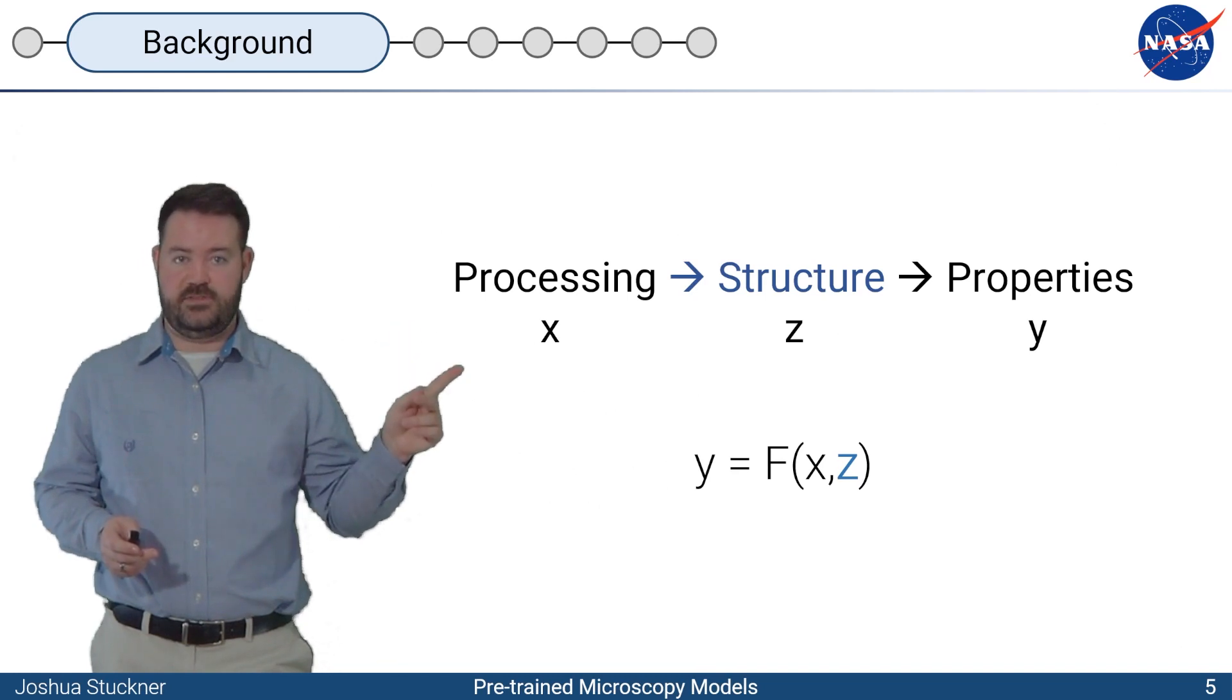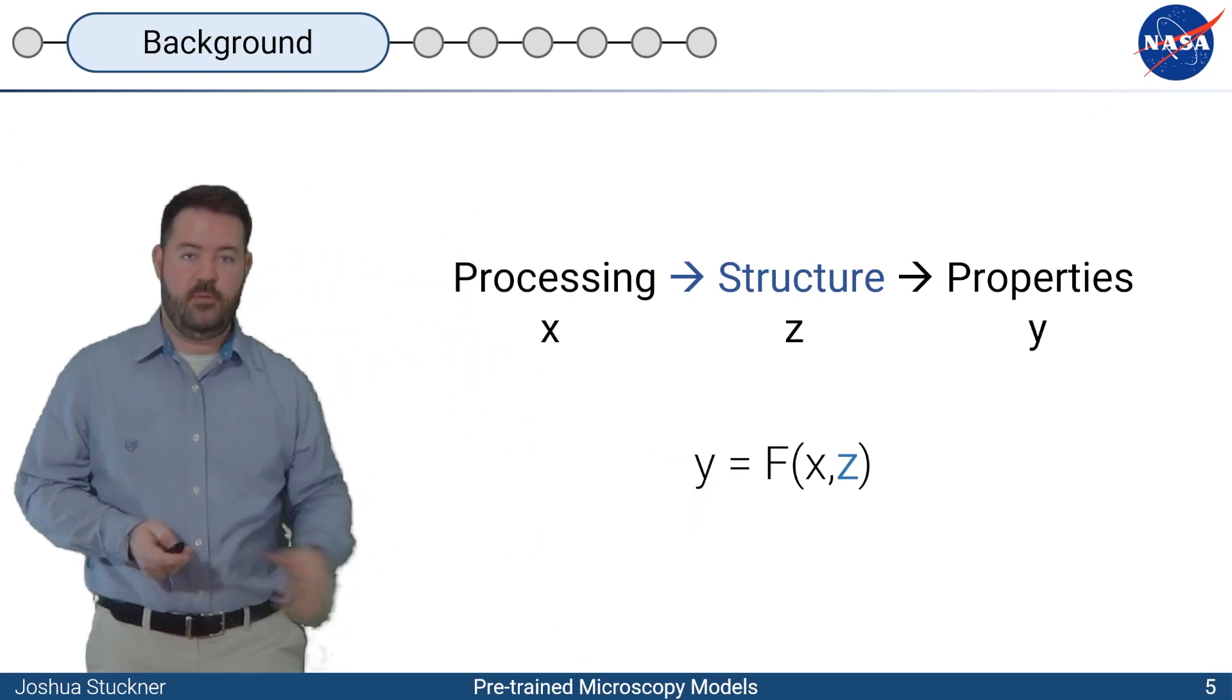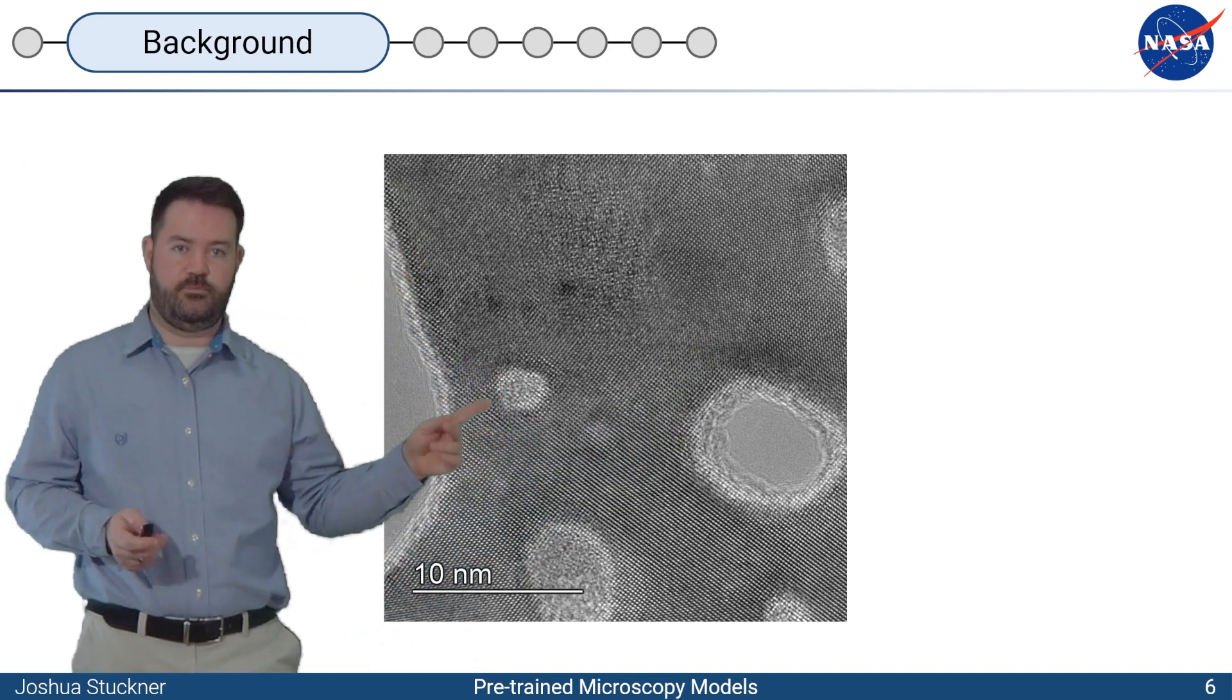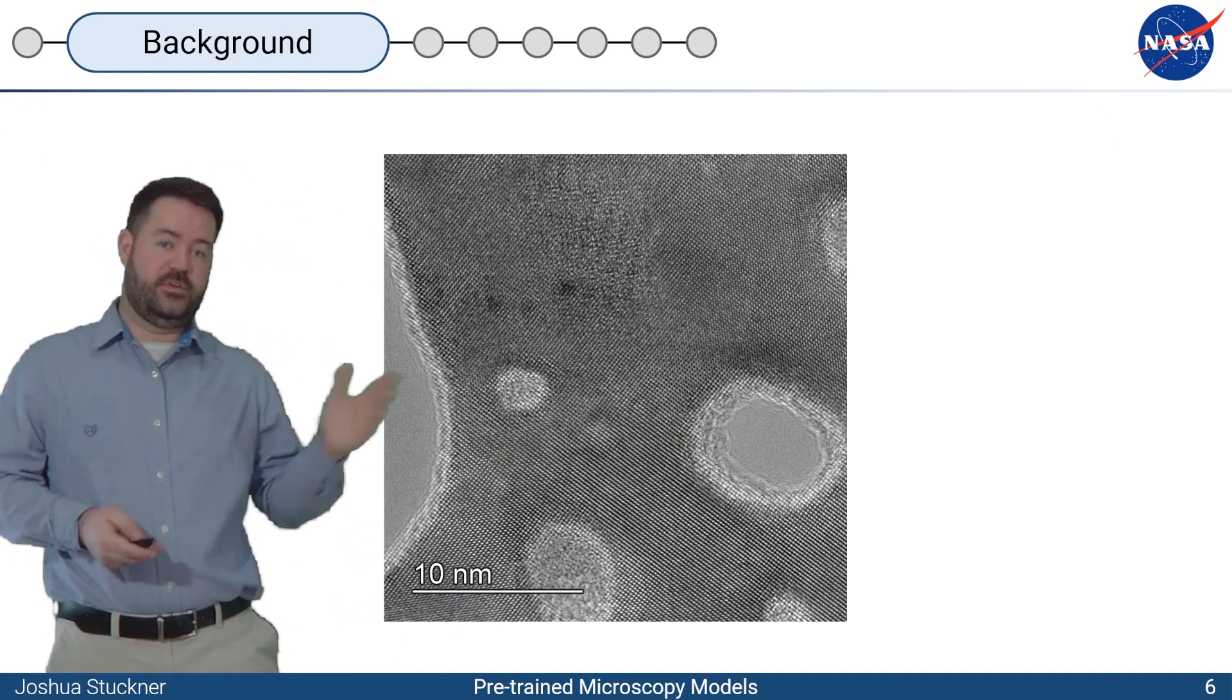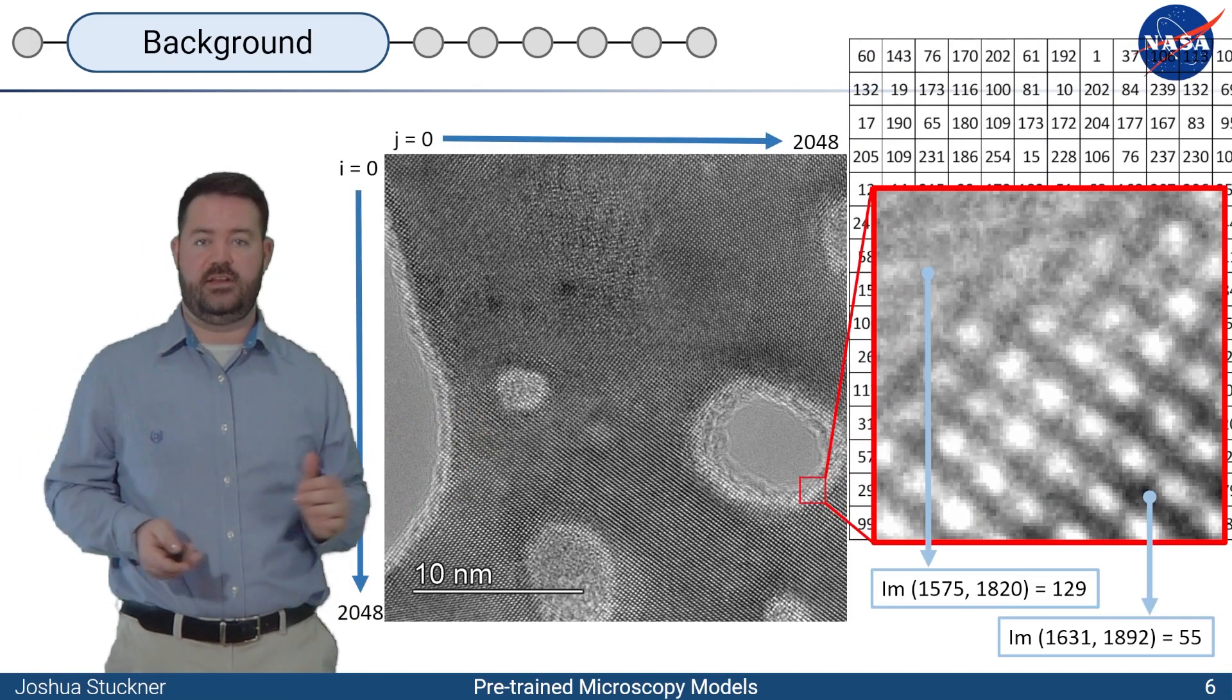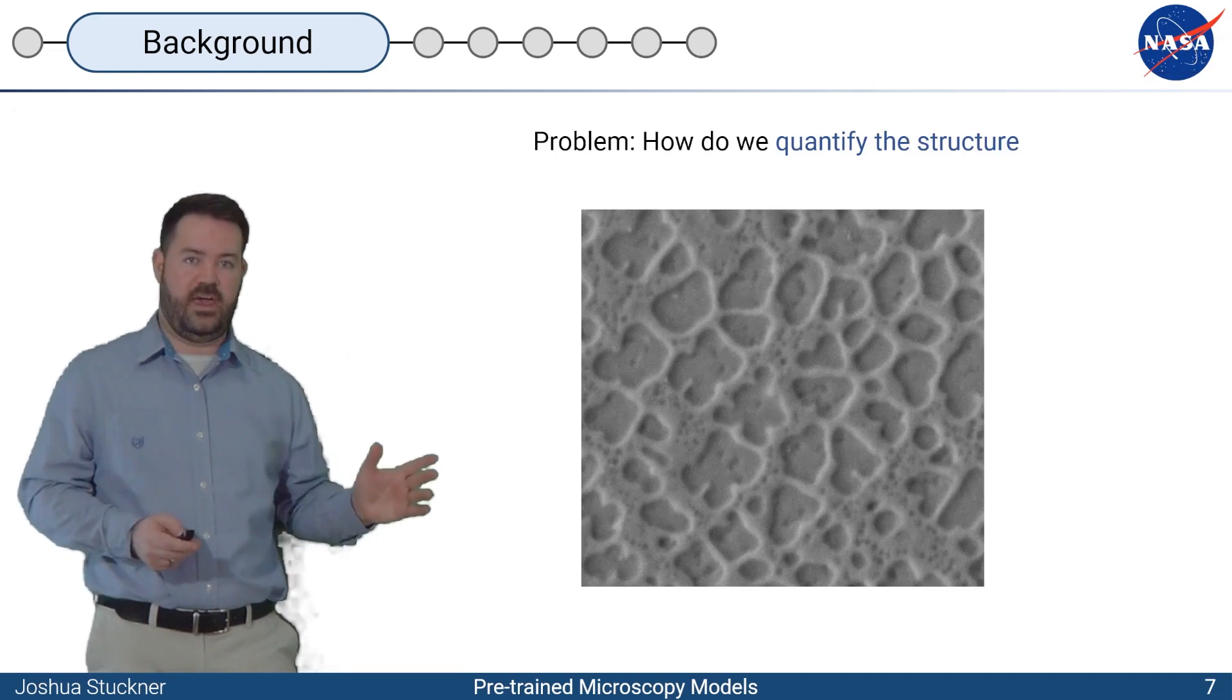When we look at a microstructure we might say it has some pores here, maybe these are lattice planes on a TEM image. But to the computer it's just an array of numbers. It's way too high dimensional to fit into these machine learning models as is. So we need to quantify this microstructure. But how do we do that?